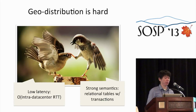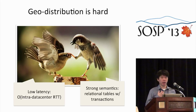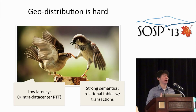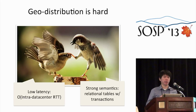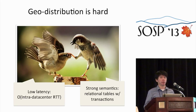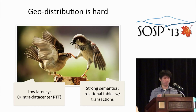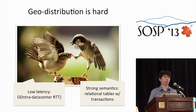Geo-distribution is a hard problem because we have this difficult trade-off between low latency and strong semantics. By low latency, I mean that applications demand fast access time so that users could have a good experience. Ideally, we would like to make sure that applications only issue requests to the local data center. By strong semantics, I mean that programmers need easy-to-use programming support, such as relational tables and transaction support. It's very difficult to find a point between those two trade-offs.